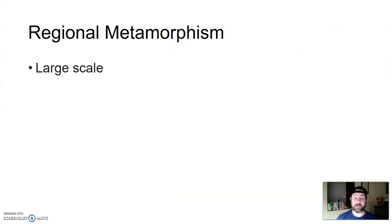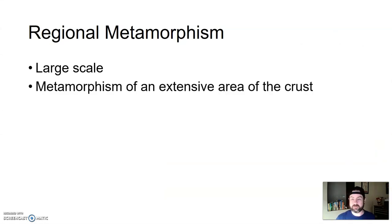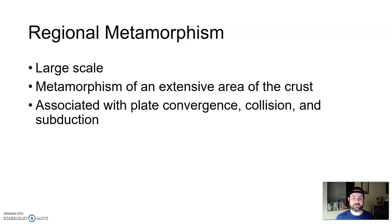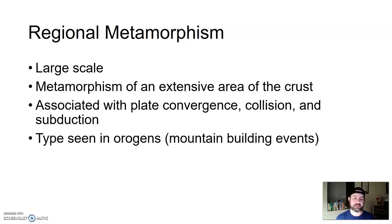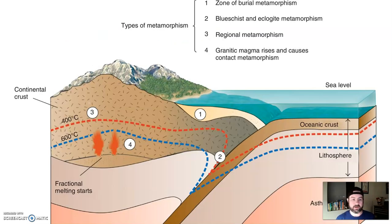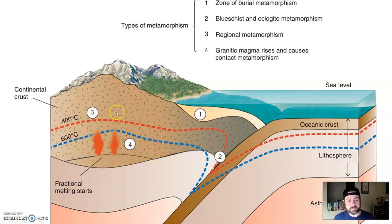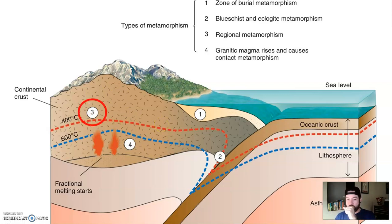Regional metamorphism happens on a very large scale. This is metamorphism of an extensive area of crust, often associated with plate convergence, convergent boundary collisions, and subductions. It's the type of metamorphism we see in orogenies, which are mountain-building events — very large, broad zones of metamorphism. This is a convergent boundary with continental crust colliding with oceanic crust, creating a subduction zone. Because you're getting a lot of pressure built up as these mountains crumple up, this is where you get regional metamorphism.